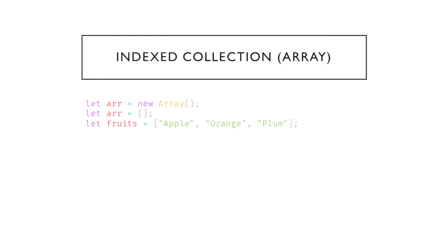The bracket notation is way shorter and easier to understand. The new Array constructor actually has a few unexpected bugs we'll discuss later. We can also pre-populate the array — giving it apple, orange, and plum creates a new array with three strings. Let's move on to the code editor.